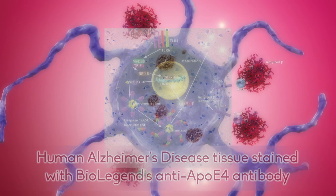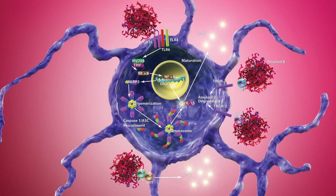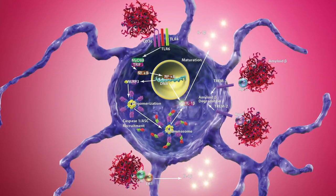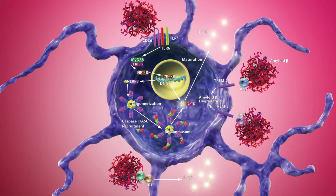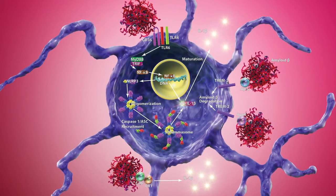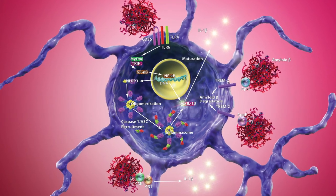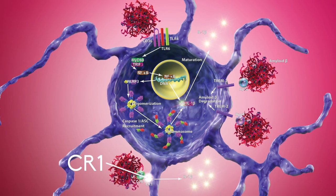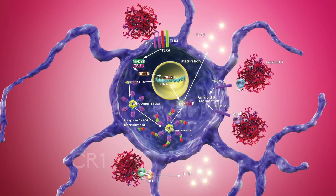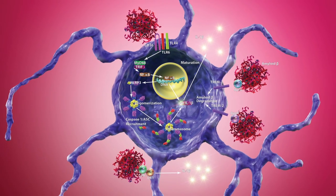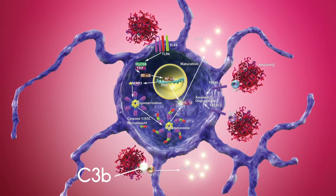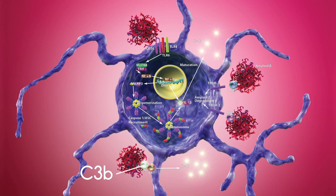The complement system and its components play a prominent role in the inflammatory responses in Alzheimer's disease. Complement receptor 1 mediates phagocytosis and clearance of C3b-opsonized amyloid beta.